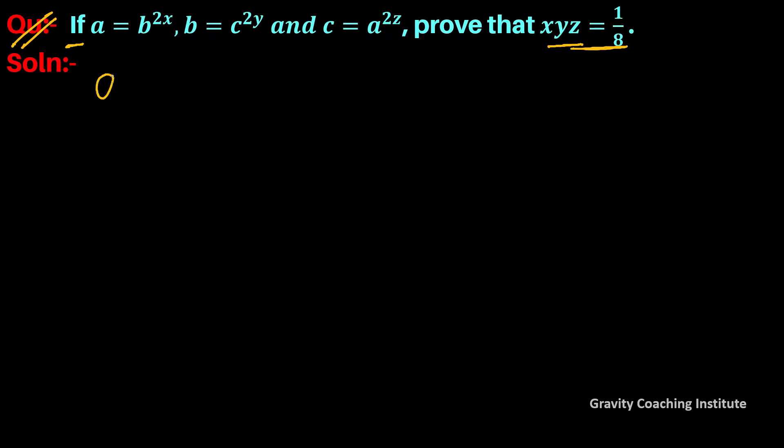So here we are given: a equals b to the power 2x, and b equals c to the power 2y, and c equals a to the power 2z.